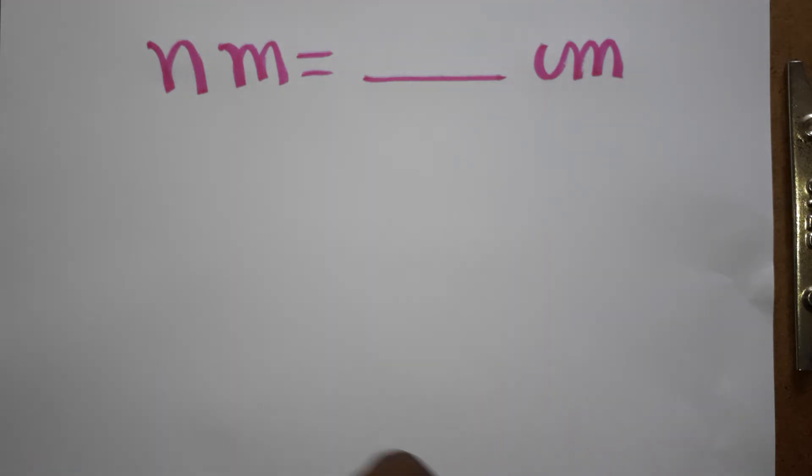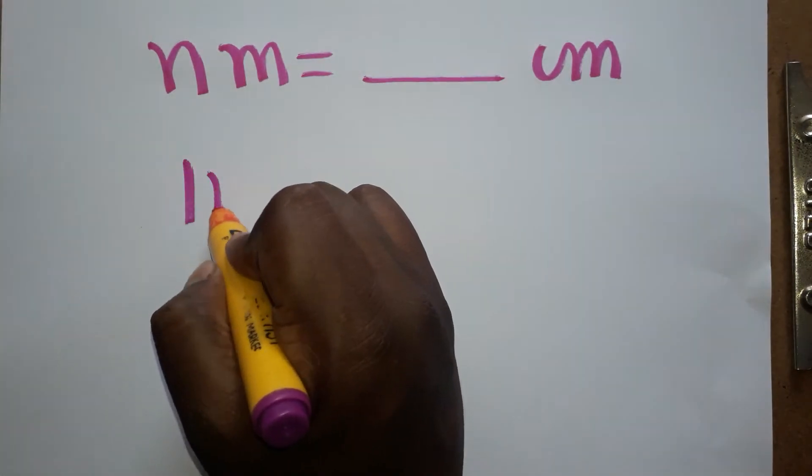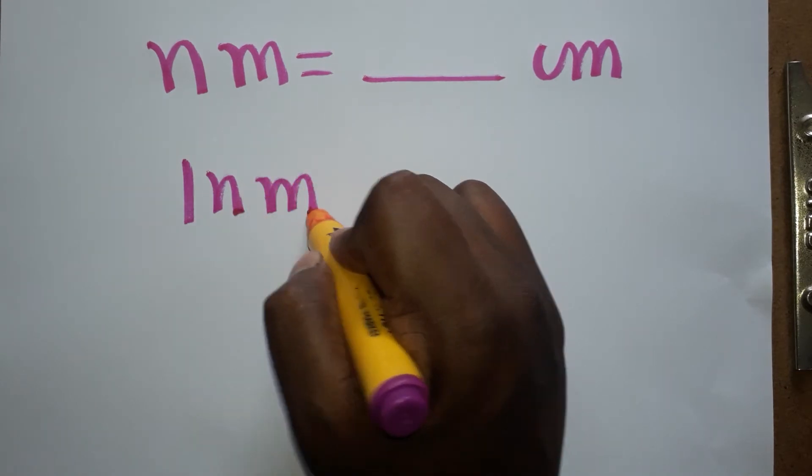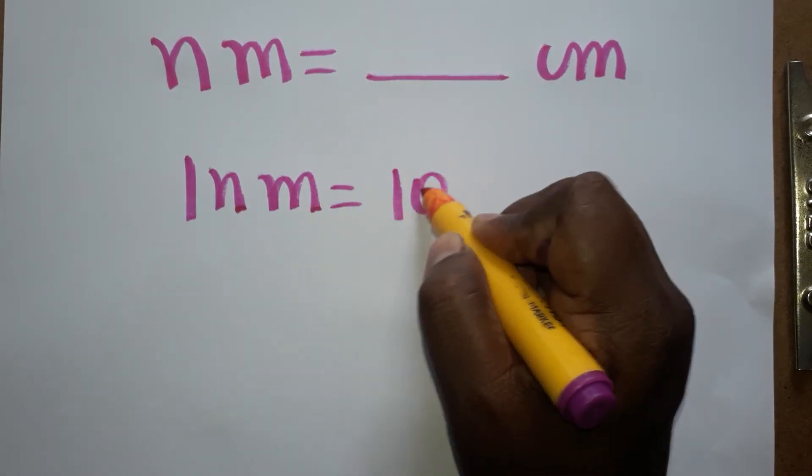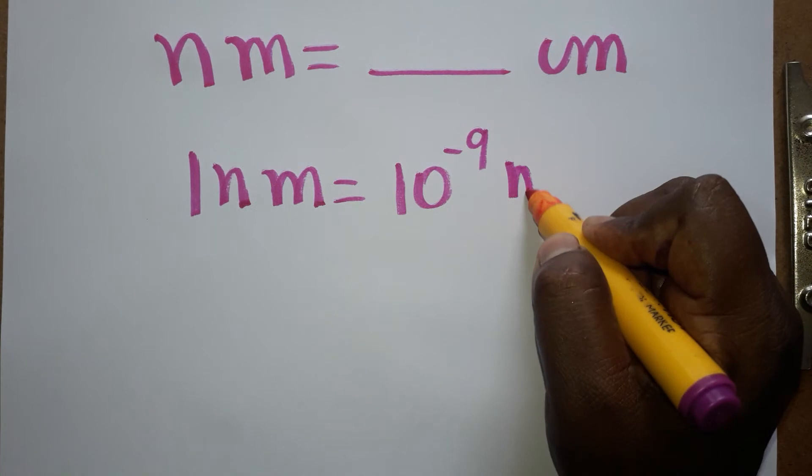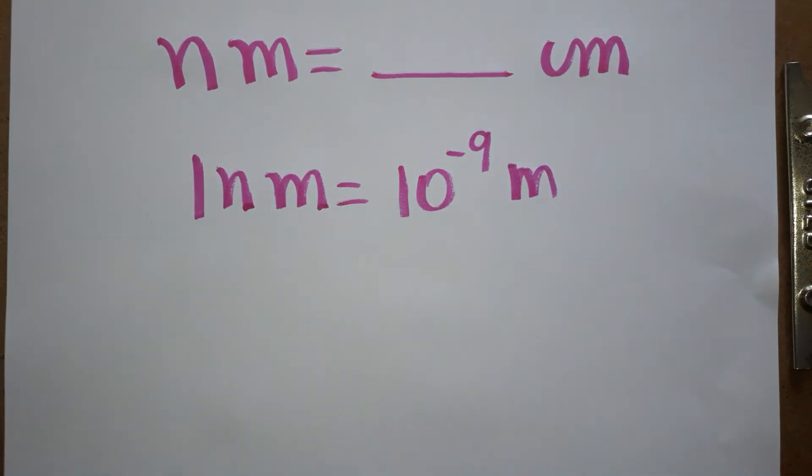If you like my channel, please subscribe. First, we will learn: one nanometer is 10 power minus 9 meter. For both units, you have to compare with meter, because meter is a unit.